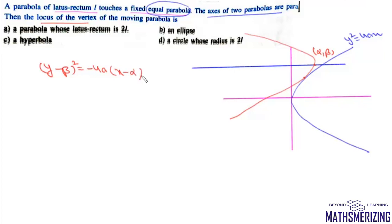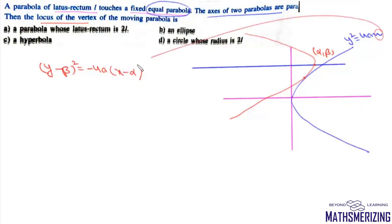Now we need to find the condition that these two parabolas touch each other. I'll find the point of intersection of the two parabolas by eliminating x. I'll substitute x = y²/4a from the fixed parabola.